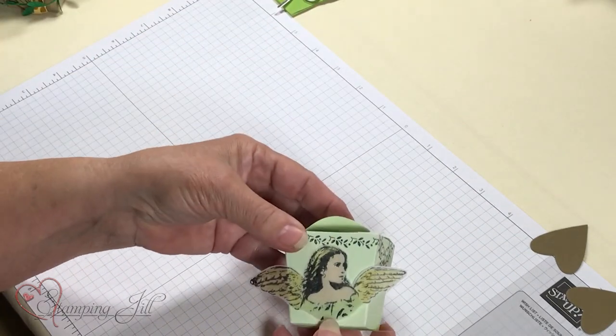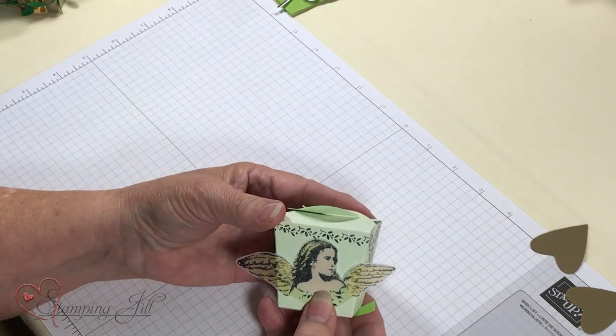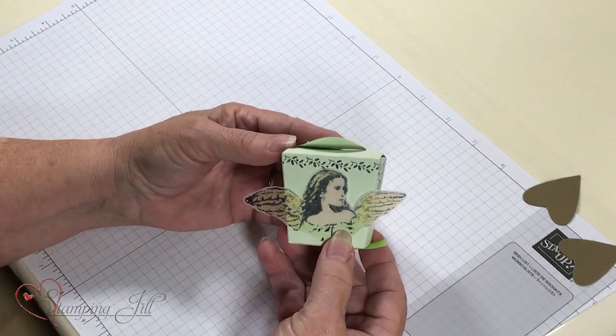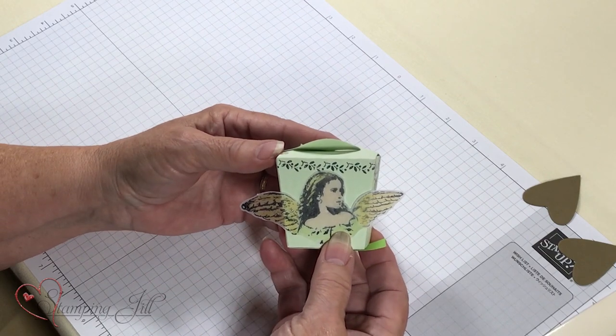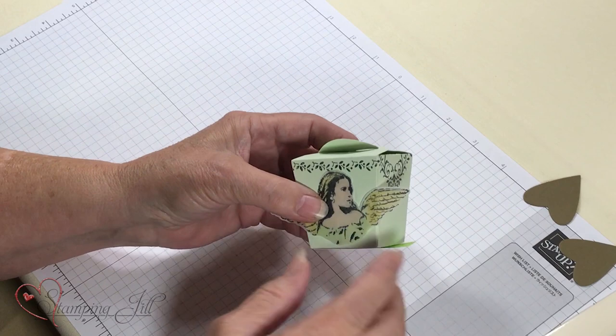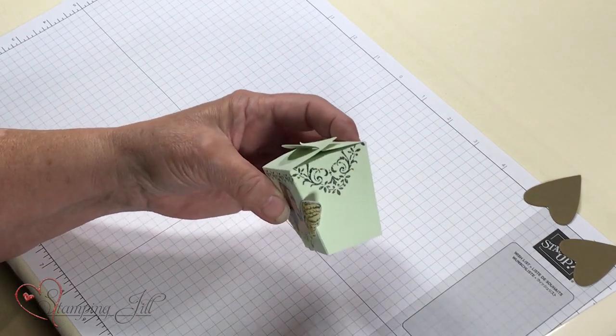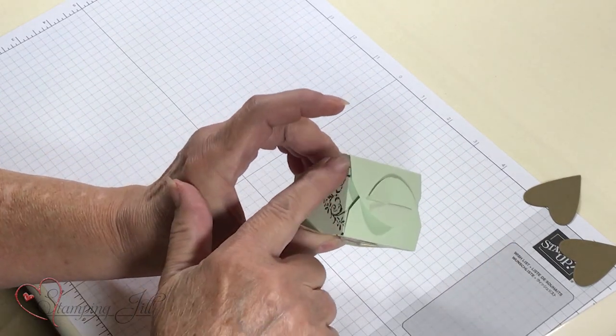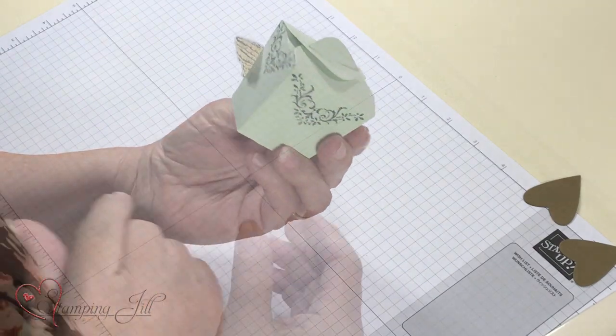This is one of my favorites. I love this angel. This is also done on vellum and just mounted on the top. In the set, it comes with these little dies, or stamps that fit perfect on there.